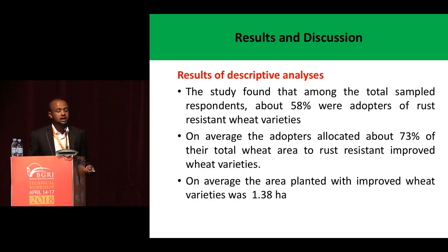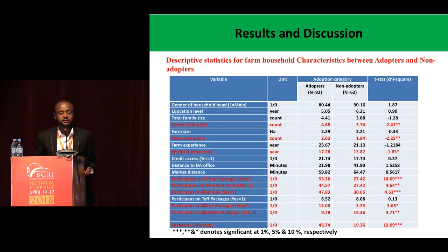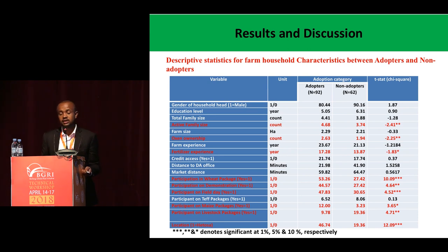When we come to the results, the study found that among the total sample respondents, about 58% were adopters of resistant wheat varieties. On average, the area planted with improved wheat varieties was 1.3 hectares, which accounts for 73% of the total wheat area. This table shows descriptive results of farm household characteristics between adopters and non-adopters. As you can see, in most household characteristics, adopters and non-adopters are significantly different.